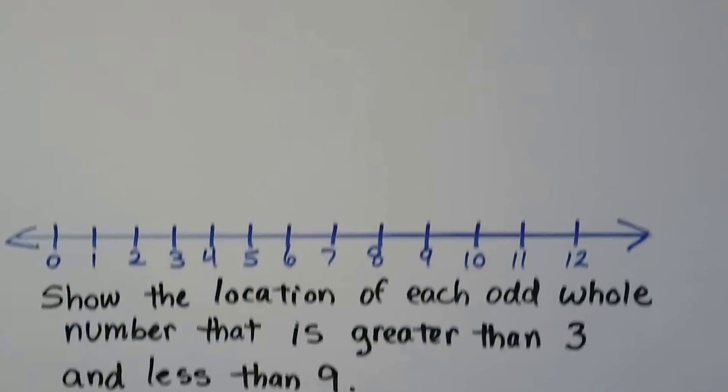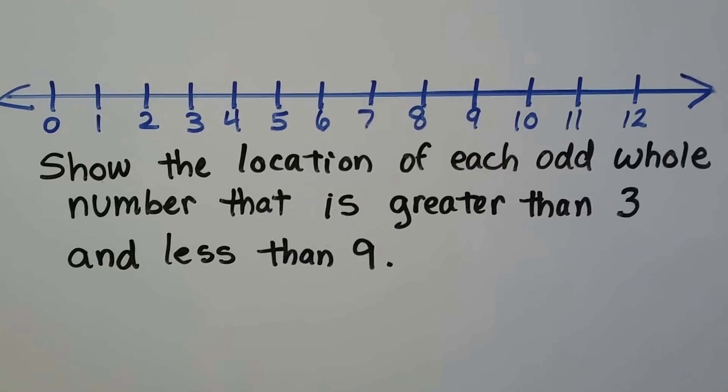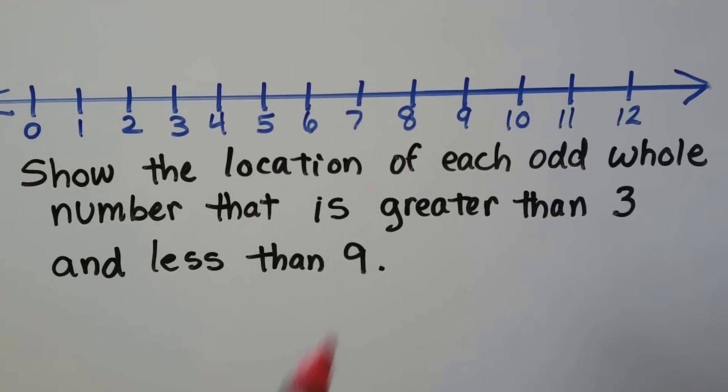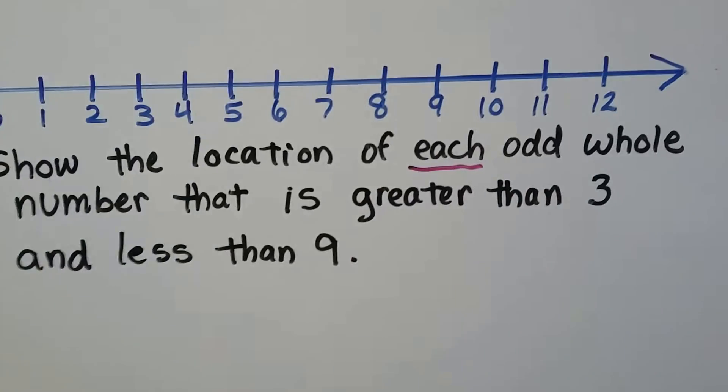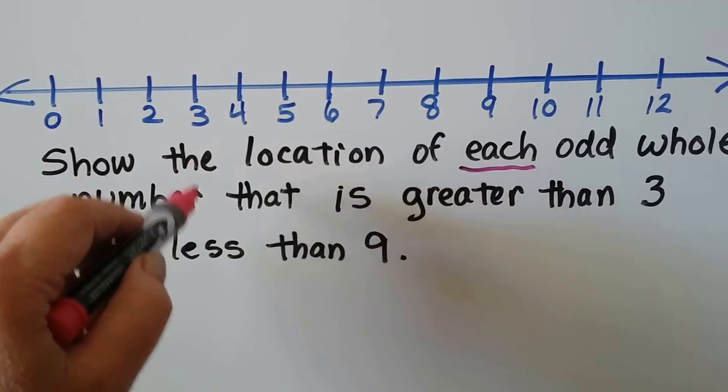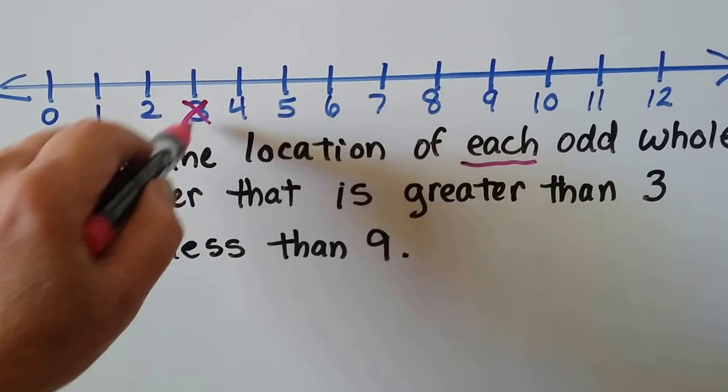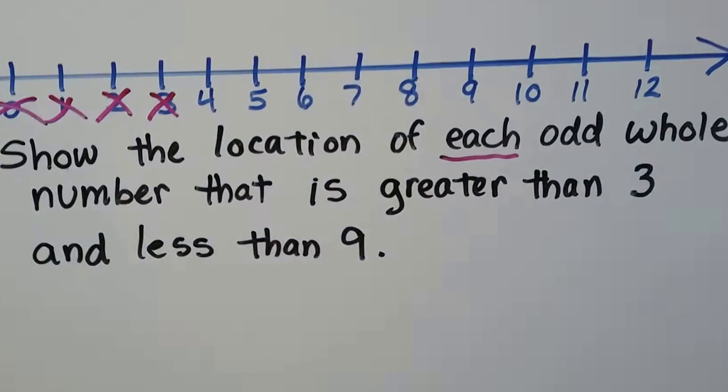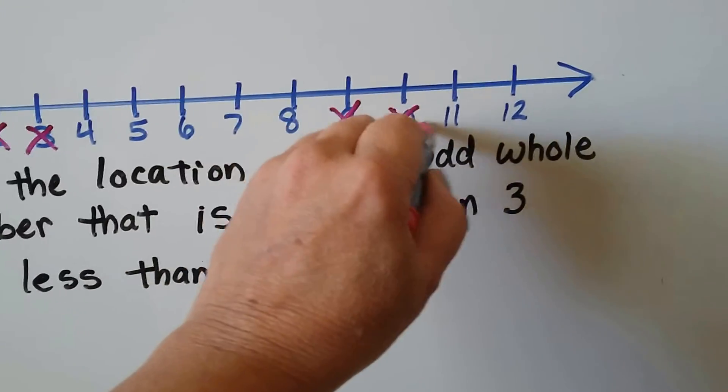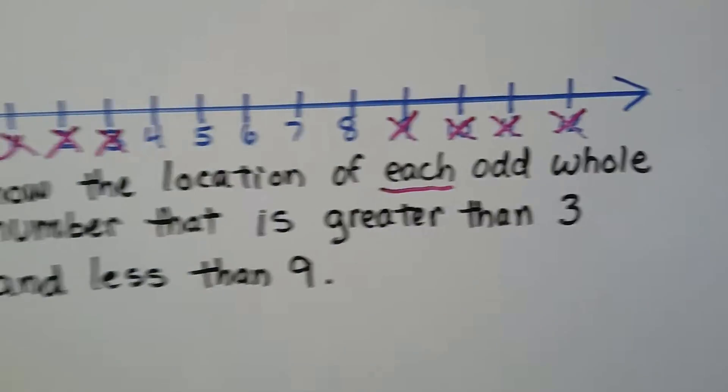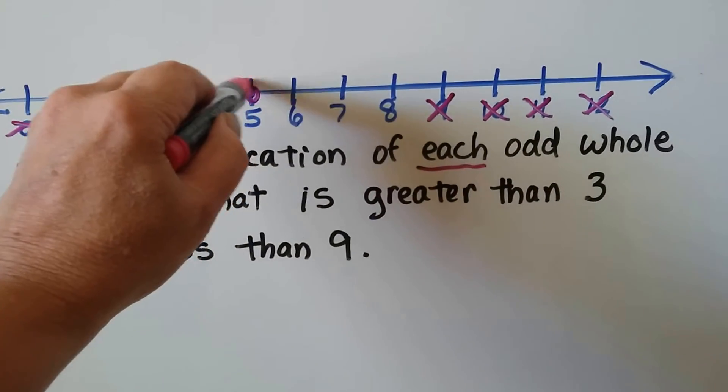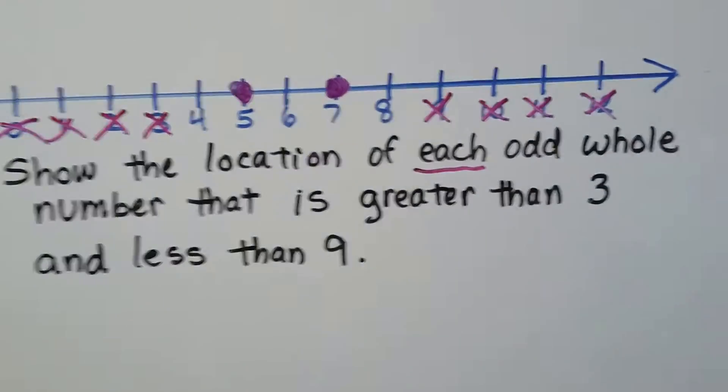Let's try one more. It says, show the location of each odd whole number that is greater than 3 and less than 9. So because it says each odd, that tells me we're going to have more than one dot. And it's got to be greater than a 3. So because it's got to be greater than 3, it can't be 3. Can't be 2, can't be 1, can't be 0. And it's got to be less than a 9. So if it's less than 9, it doesn't include 9. And it's got to be less than that, so all these bigger numbers don't count. So which of these are odd numbers? Well, 5 is odd, and 7 is odd.